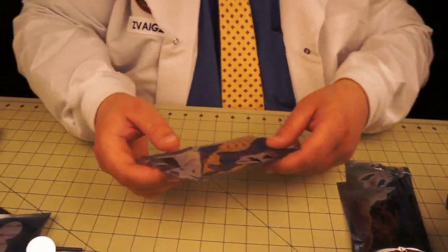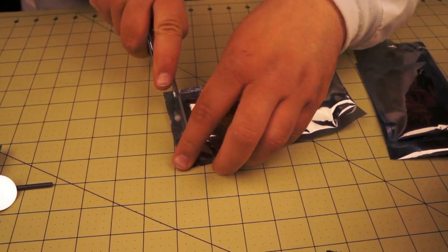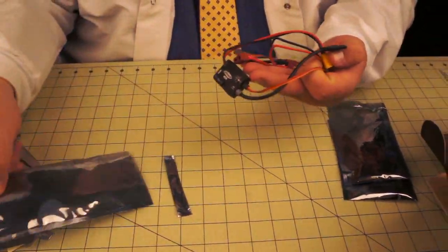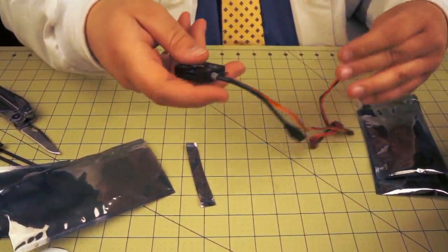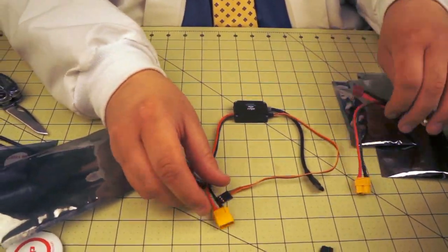Next thing we have here, this is the power unit. This is what feeds power to the system, and it comes with an XT60 connector.